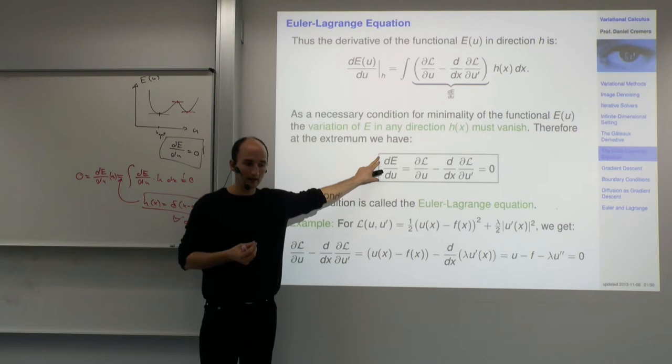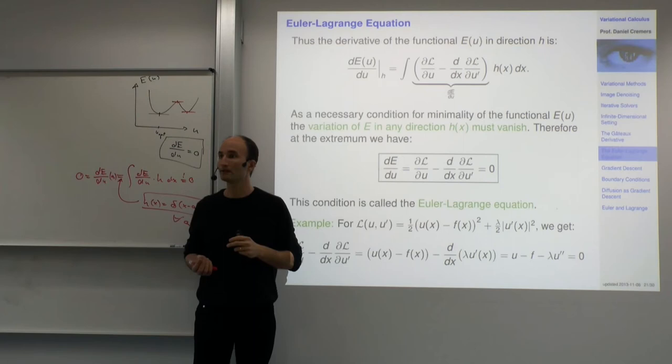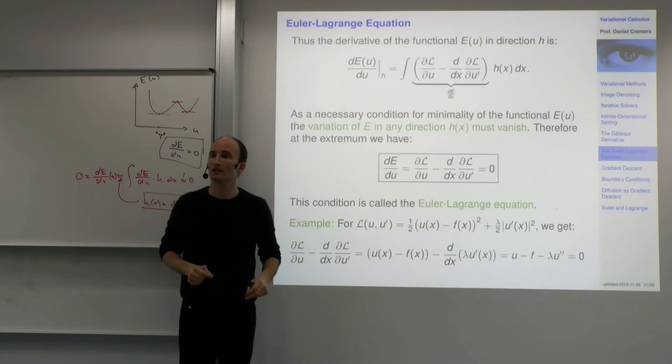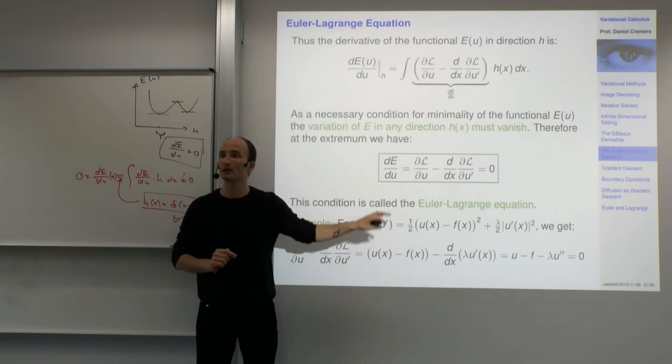This is the key idea why variational methods go hand-in-hand with differential equations. The extremality principle — the condition that the energy doesn't change infinitesimally at the minimizer — for functionals, is a differential equation.